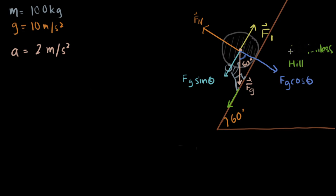Let me update that — friction hill. So this time it has a friction, which I will name force sub f. This is small f, this is big F. It has friction and it is now moving in uniform acceleration of 2 meters per second squared.